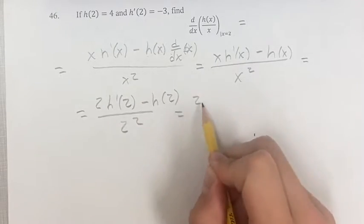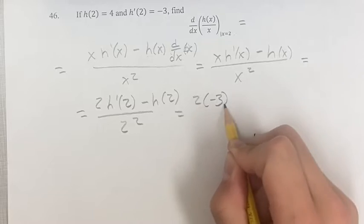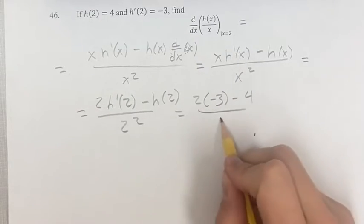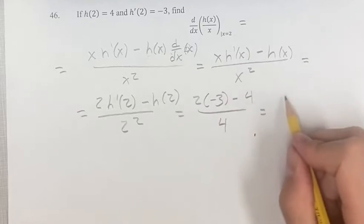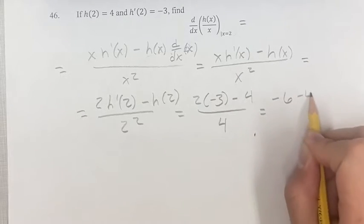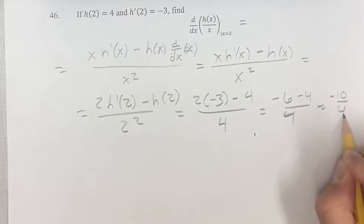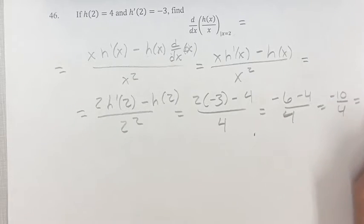This is 2 h prime of 2 we've been given as negative 3 minus h of 2 we've been given as 4 over 2 squared is 4. So you get 2 times negative 3 is negative 6 minus 4 over 4, which is negative 10 over 4 equals negative 5 over 2.